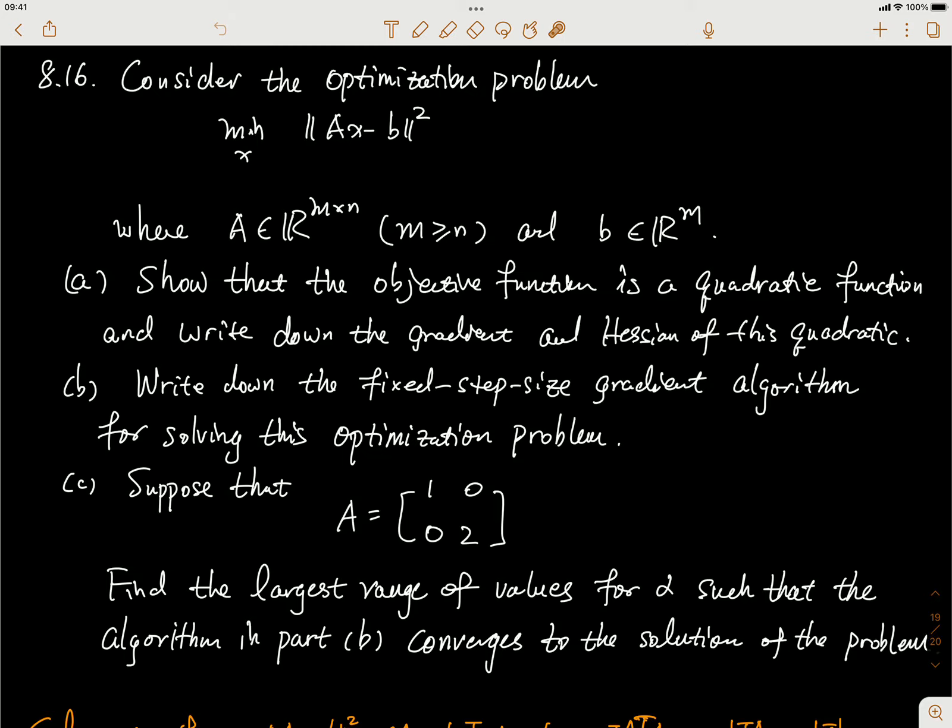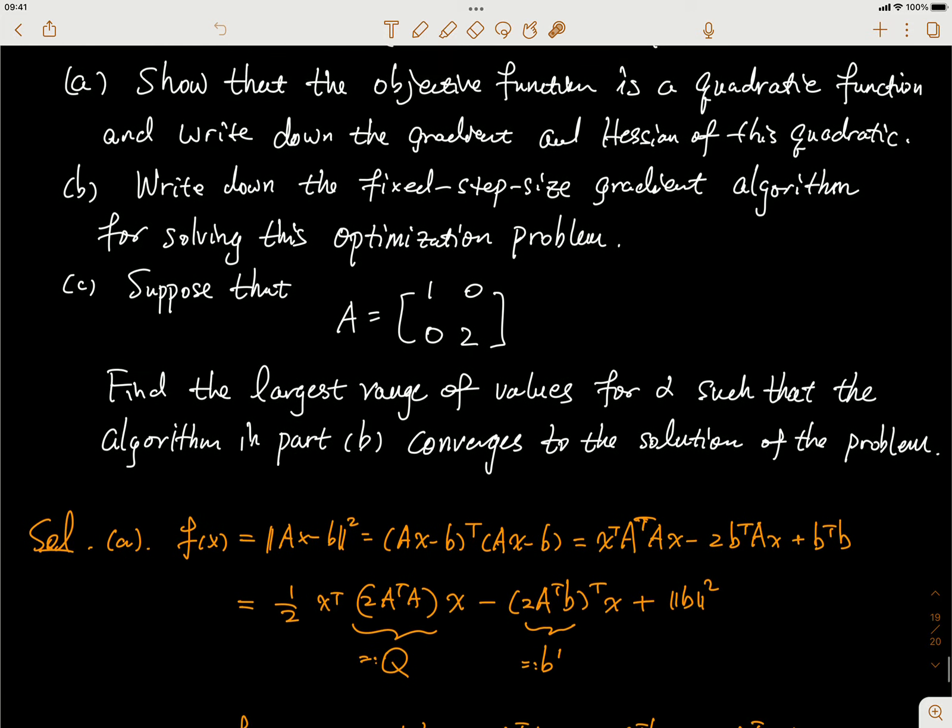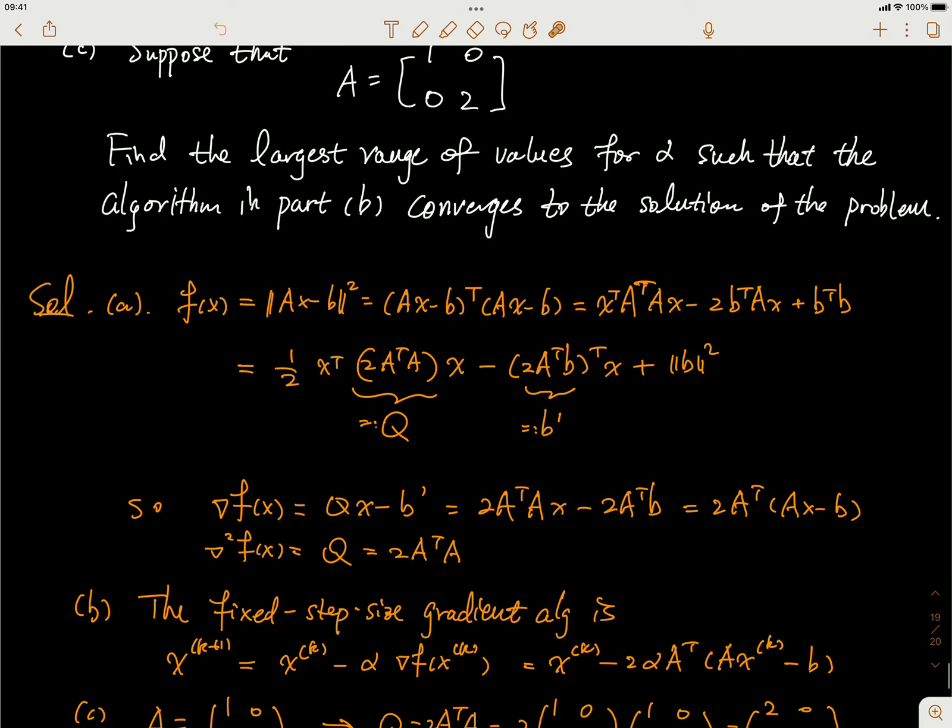So why is this a quadratic function? It's pretty easy, you just need to write it out. f(x) equals ||Ax - b||² and we know this is a vector inside. The square norm of a vector is just the inner product of the vector with itself. So that's what we get, and then you can put this transpose inside.